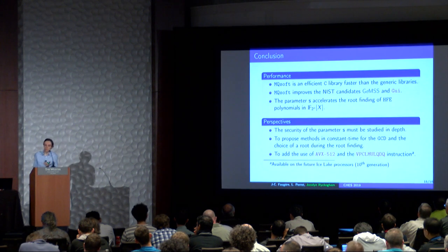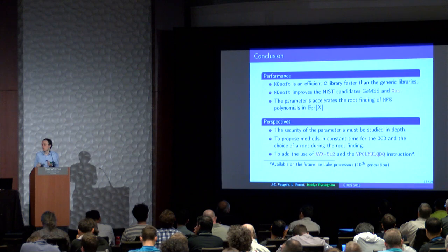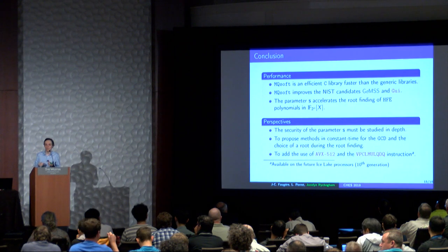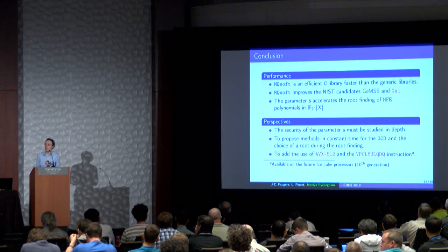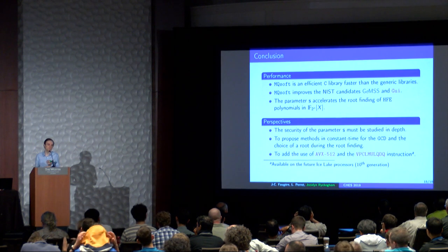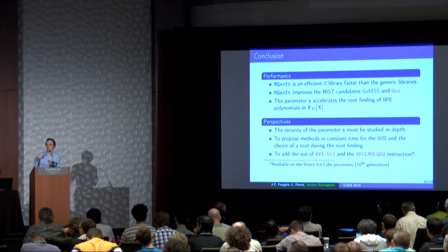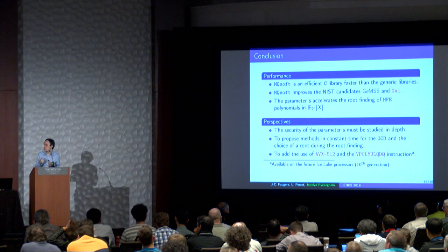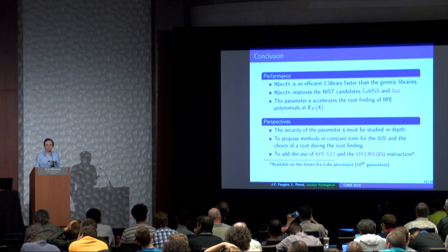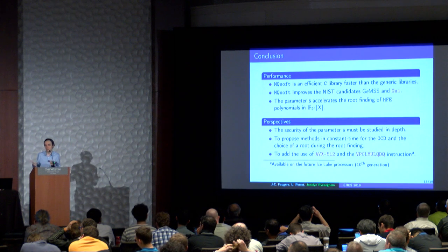In conclusion, MQSoft is a really efficient library in C. It is more efficient than generic libraries, and for specific implementations we are similar or faster. We improve upon the NIST candidates, and we have a strategy with parameter S to improve the signing process, but we think we need to study in more depth the security against other attacks, for example MinRank or others. In root finding, we need to use the GCD, and for some moments it is not yet in constant time — we think with the previous talk we can solve this problem. Finally, with new instruction sets like AVX-512 or the VPCLMULQDQ instruction on future Skylake processors, we can further improve the multiplication in the cryptographic operations.